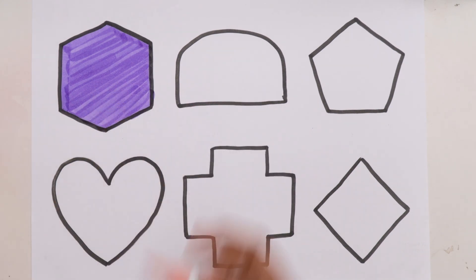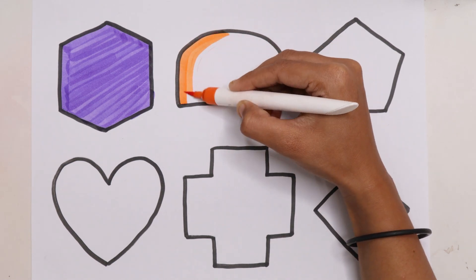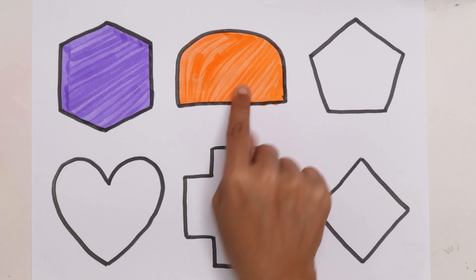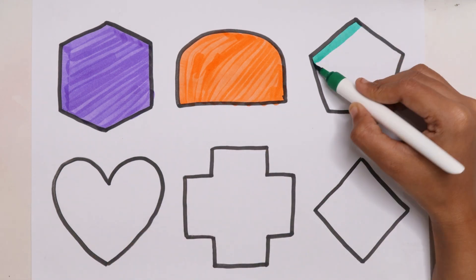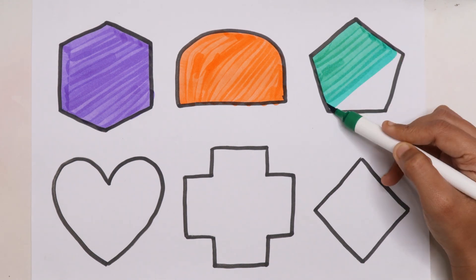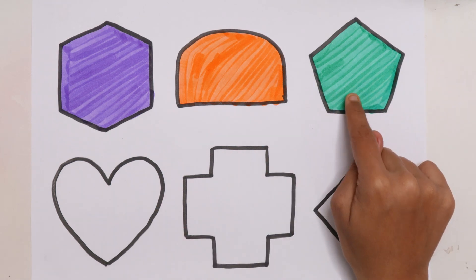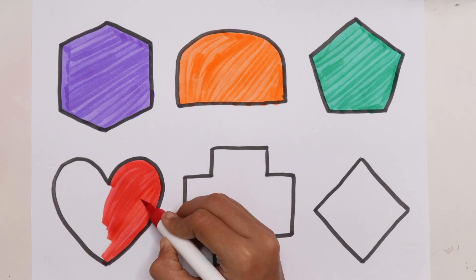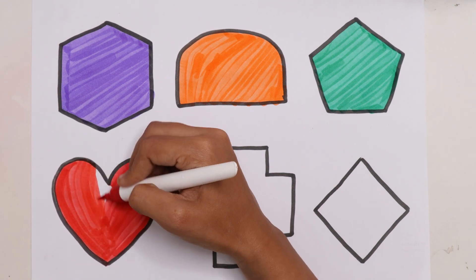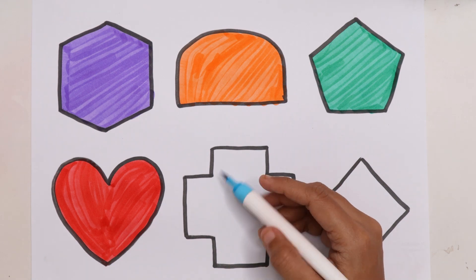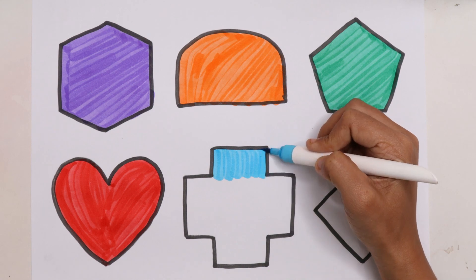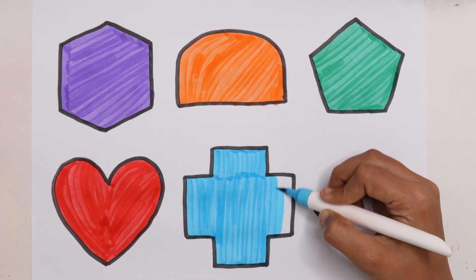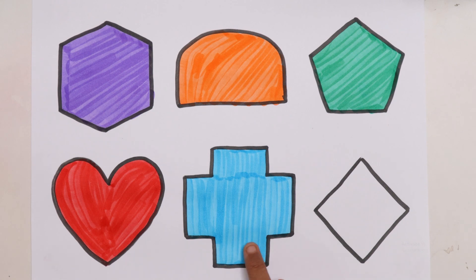Blue color hexagon. Orange color semicircle. Dark green color pentagon. Red color heart. Sky blue color cross. Brown color rhombus.